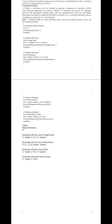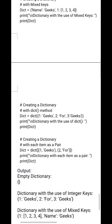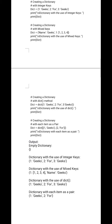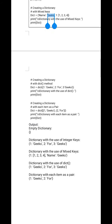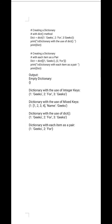We can also create a dictionary with mixed keys — using both names and numbers as keys with their corresponding values. We can also create a dictionary using the dict() method: dict = dict({1: 'geeks', 2: '4', 3: 'geeks'}), and it prints as-is. Another way is creating a dictionary with each item as a pair: dict = dict([(1, 'geeks'), (2, '4')]), where the key-value pairs are explicitly defined and printed.